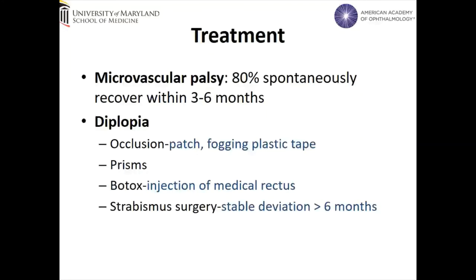Various approaches can also be pursued for treating the patient's diplopia and for providing symptomatic relief. Occlusion of one eye using a patch or fogging plastic tape installed in the patient's spectacles can be used to relieve symptomatic diplopia. In addition, prisms may be fitted into the patient's glasses for temporary relief or for chronic stable deviations, which may reduce and in some cases completely resolve the patient's diplopia. Botox may be considered in cases where the angle of deviation is too large to correct with prisms; specifically, injection of the medial rectus muscle can help reduce the size of nasal deviation. In cases of a stable deviation that persists for greater than 6 months, strabismus surgery can be considered for treatment.